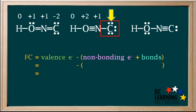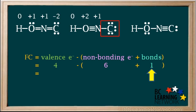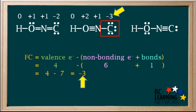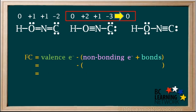Now for the carbon atom on this molecule. Carbon has four valence electrons. The carbon here has six non-bonding electrons around it, as shown by the dots, and one bond. So the formal charge is four minus seven, which is equal to negative three. Again, we see that the formal charges in this molecule, plus two, plus one, and minus three, add up to zero.